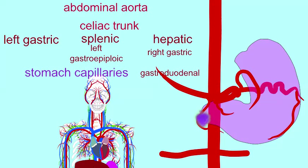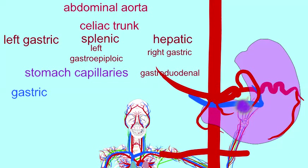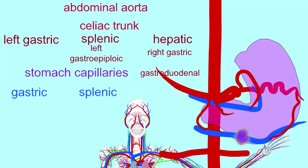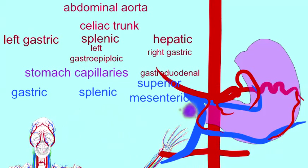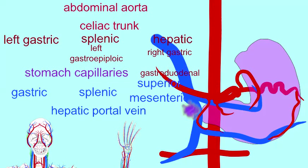The deoxygenated blood, which then collects in these three separate regions of the stomach, could then be drained through three separate veins. The lesser curvature of the stomach can be drained by the gastric vein, the greater curvature near the spleen can be drained by the splenic vein, and some of the stomach such as the pyloric region can be drained by the superior mesenteric vein. These three veins empty into the hepatic portal vein.